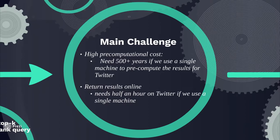There are two challenges in the query. Firstly, if we pre-compute all the top-k results, it incurs prohibitive computational costs. In particular, if we pre-compute the top-k results for each node in Twitter on a single machine, we need more than 500 years. Even if we use multiple machines, the computational cost is still very high. On the other hand, if we return the results online, it needs half an hour with a single machine.